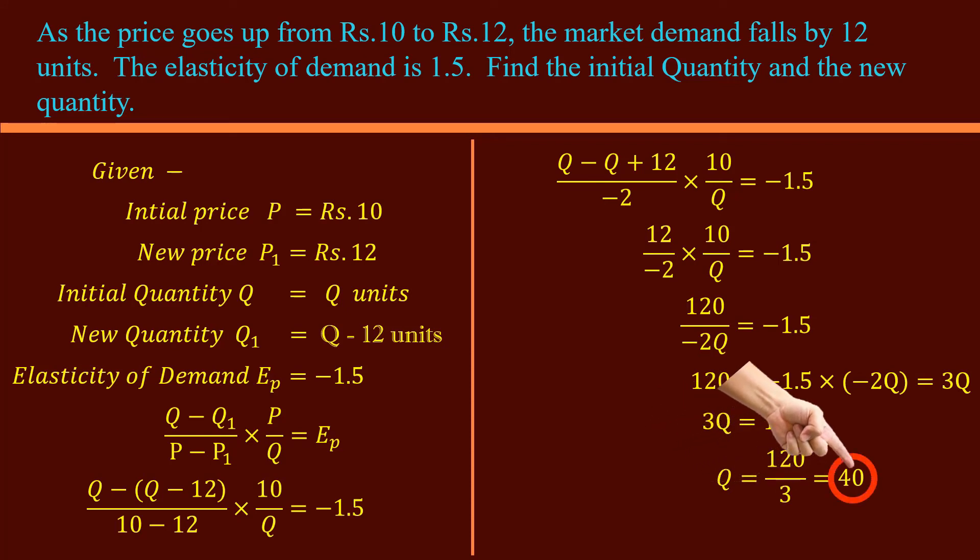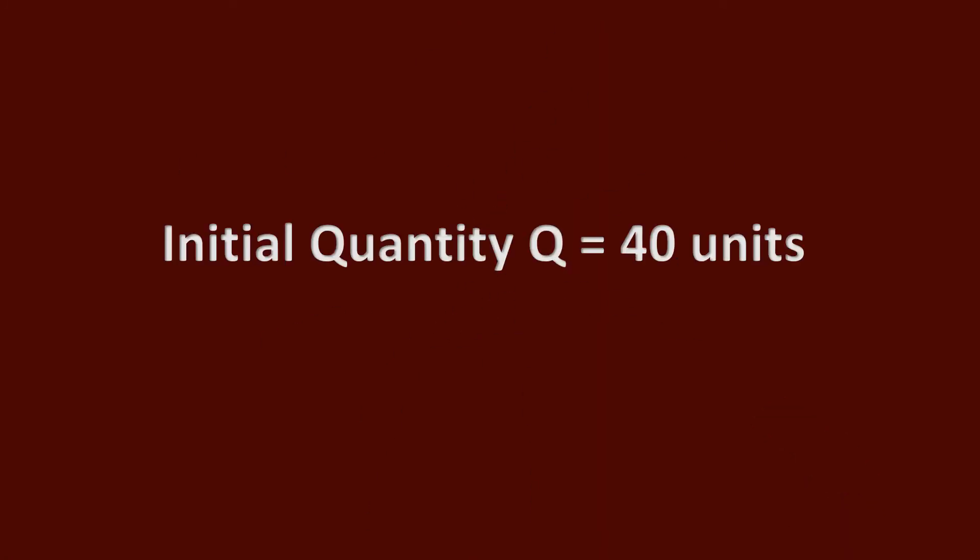Then Q1 must be 40 minus 12, 28 units. Initial quantity Q, 40 units. New quantity Q1, 28 units. Our problem ends here.